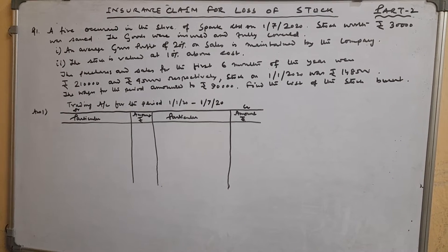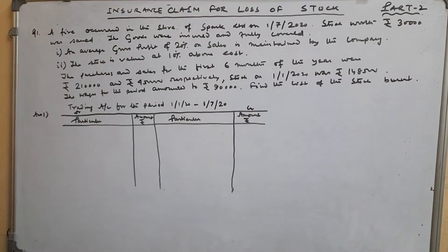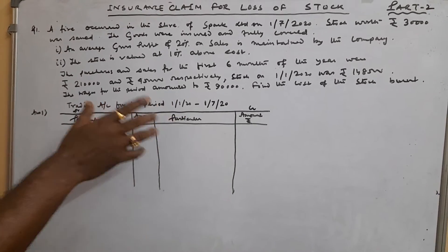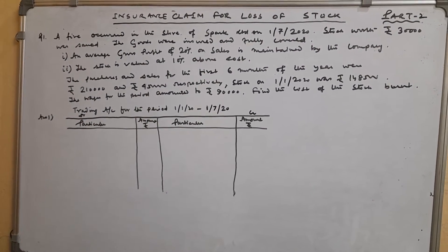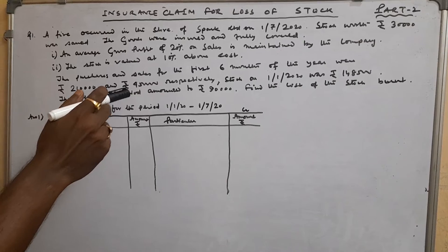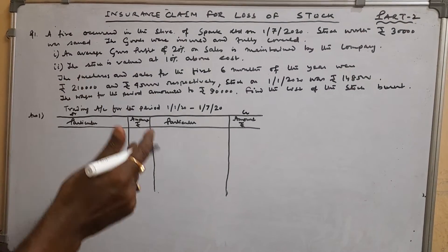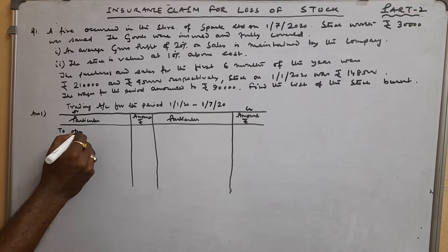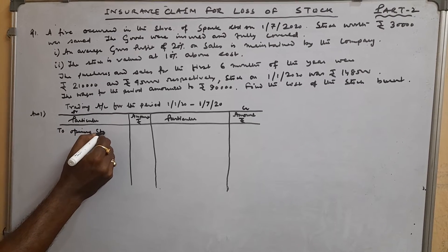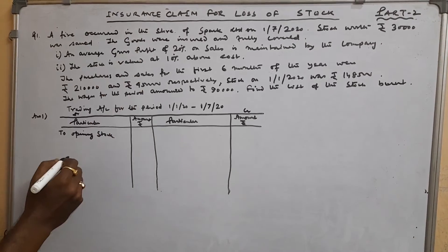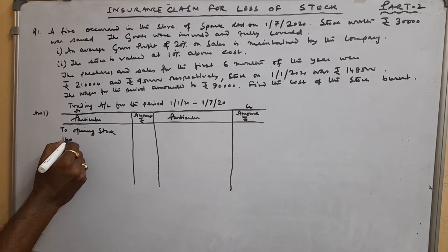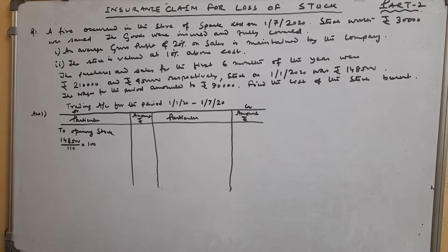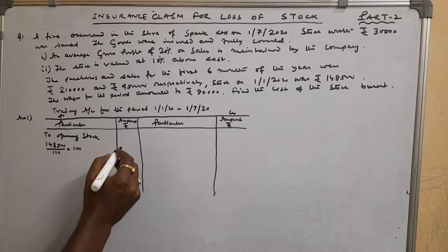Find the cost of stock burnt. For finding out the cost of stock burnt, we have to prepare a trading account for the period 1-1-2020 to 1-7-2020. Opening stock is valued 10% above cost, so we have to convert the value into original cost price. 1,48,500 divided by 110 into 100 equals to 1,35,000.